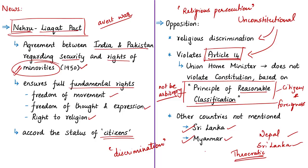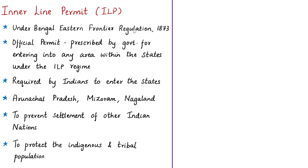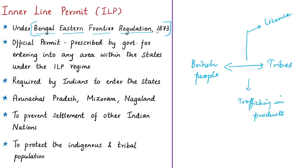The next article discusses the Inner Line Permit (ILP). The ILP is based on the Bengal Eastern Frontier Regulation of 1873. In British India, there were serious disturbances between British subjects in the plains and tribes across the frontiers, particularly regarding traffic in wood, ivory, cotton, and other jungle products. To prevent such occurrences, the government decided to prohibit British people in the plains from going beyond a certain line without a pass or license.